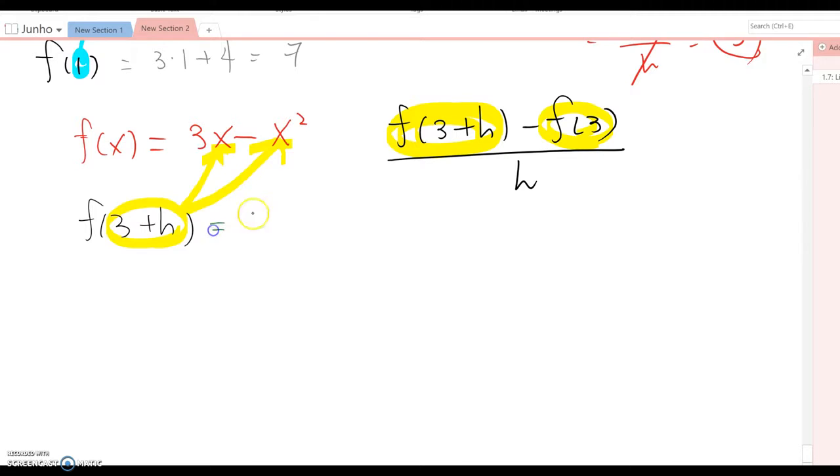Then this becomes 3(3+h) minus (3+h) squared. Then this becomes 9 plus 3h. Minus this, you must FOIL them, like (3+h) times (3+h).